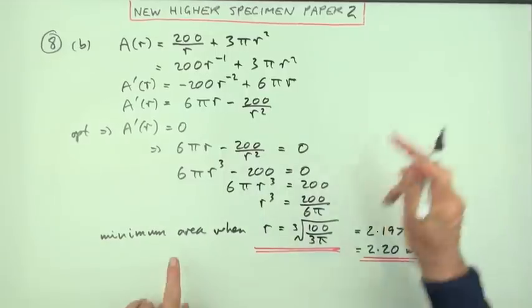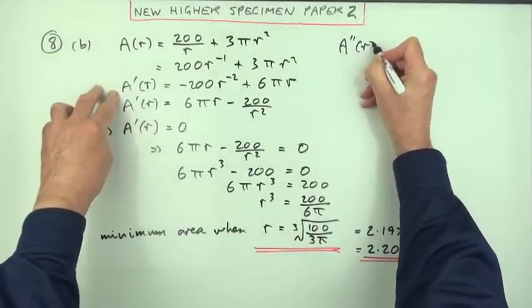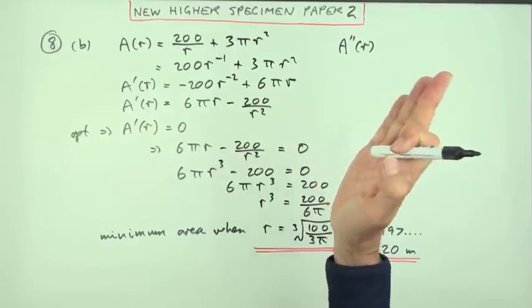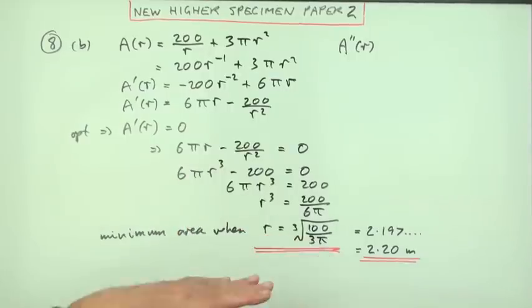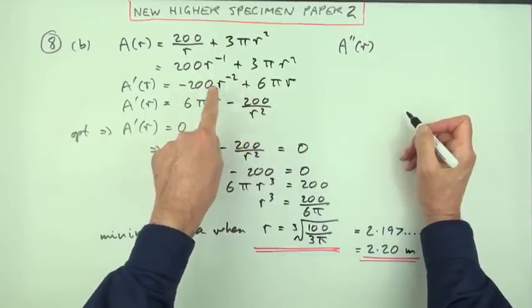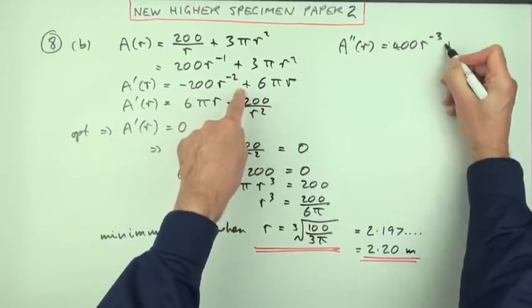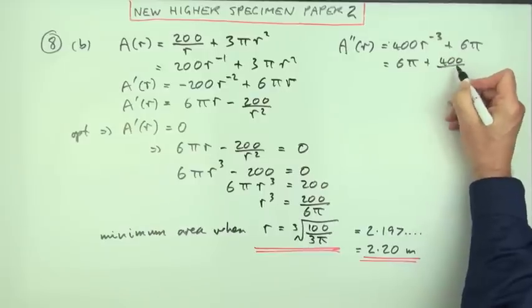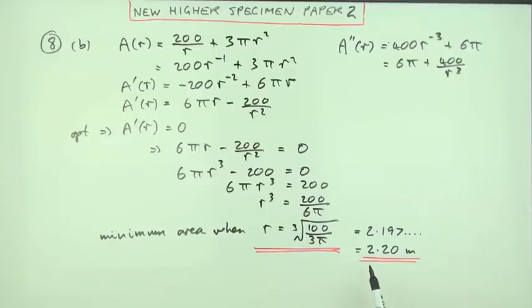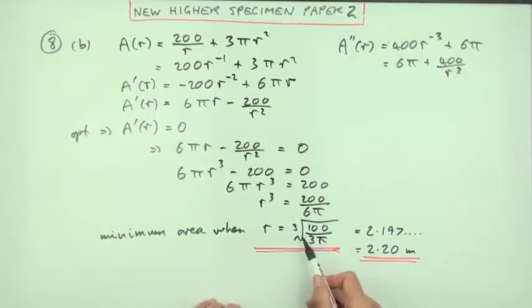Or you can justify it's a minimum by using the second derivative. Here was the first derivative, so the second derivative just means differentiate it again. That will tell you if the gradients are slowing down (maximum) or speeding up (minimum). From this expression, multiply by the power: 400 R to the negative 3 plus 6 pi. So 6 pi plus 400 over R cubed. This expression will always be positive if R is positive.